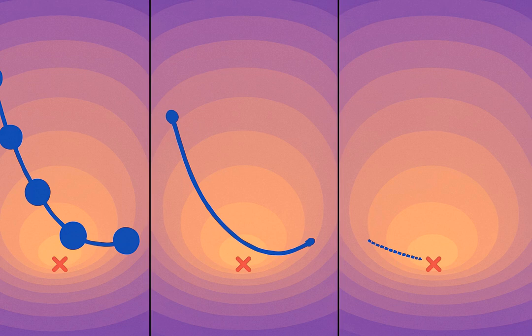But how big should each step be? That's controlled by something called the learning rate. If the steps are too big, we might overshoot the minimum. If the steps are too small, it takes forever to reach the bottom.